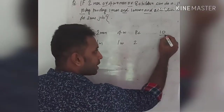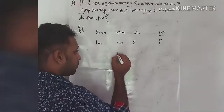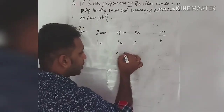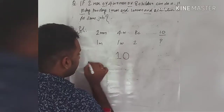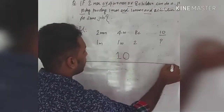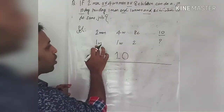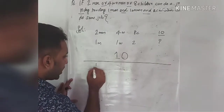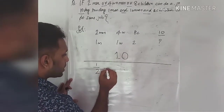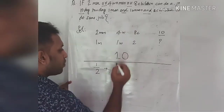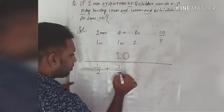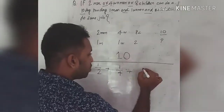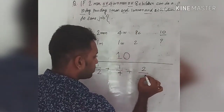The numerator value is 10. For the denominator: 1 divided by 2, plus 1 divided by 4, plus 2 divided by 8.